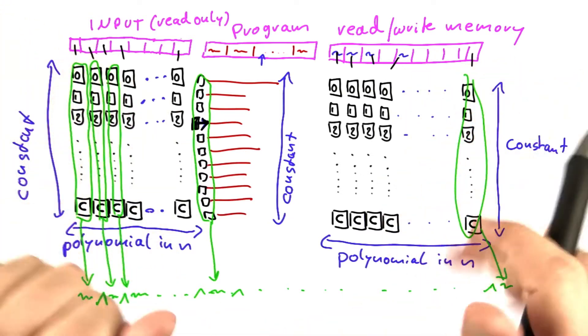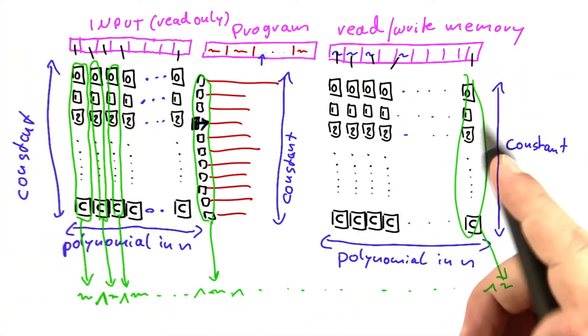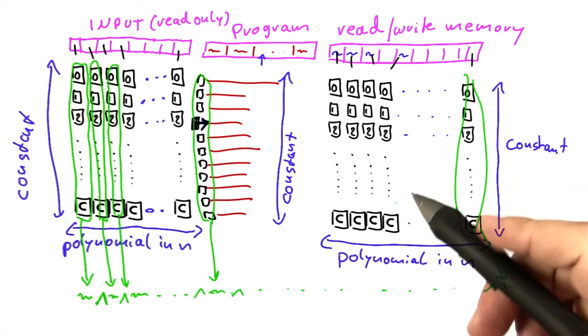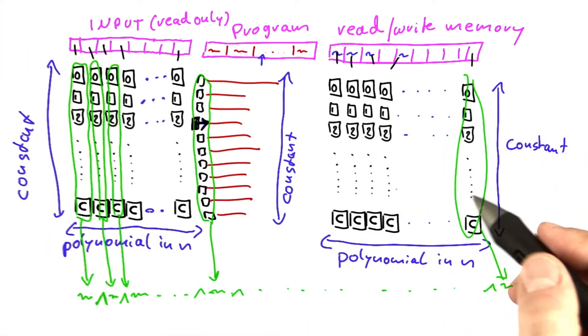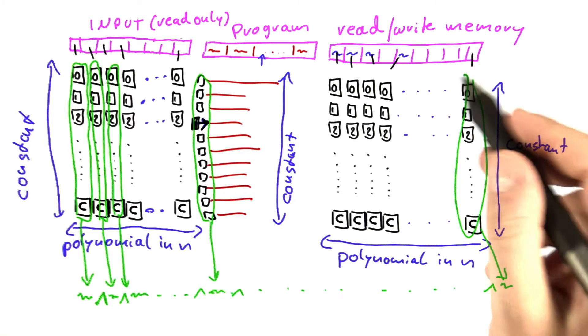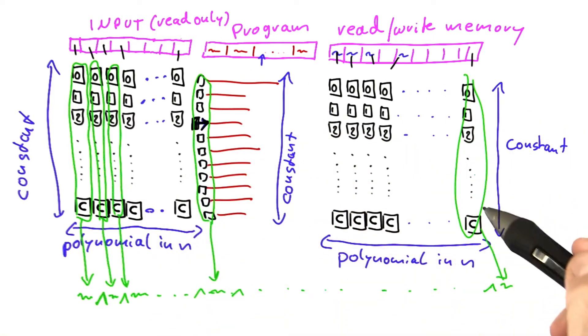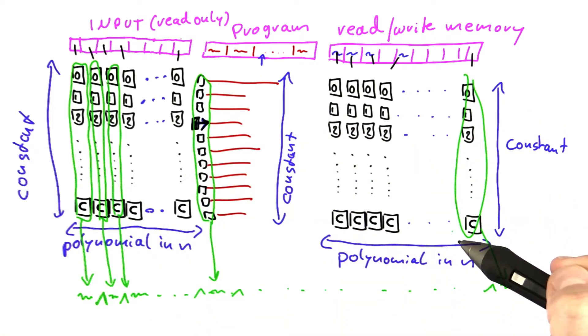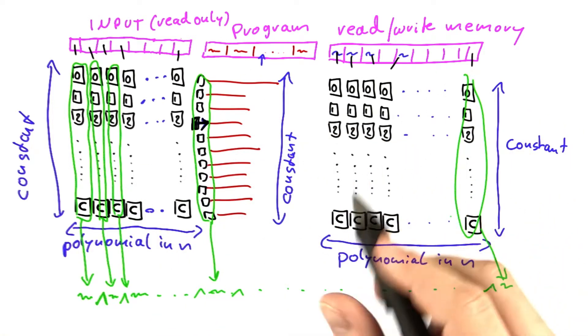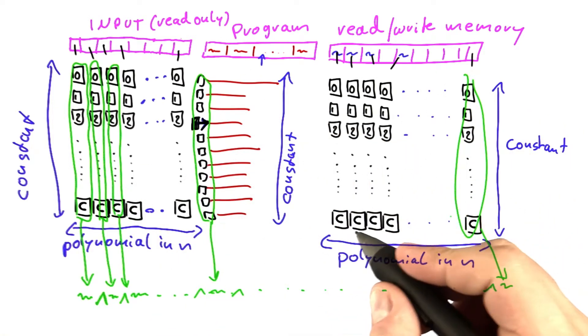And this is, I promise, going to be the most complicated part of this unit. Once you've understood this, you have understood how to prove the Cook-Levin theorem, so bear with me for another minute here.